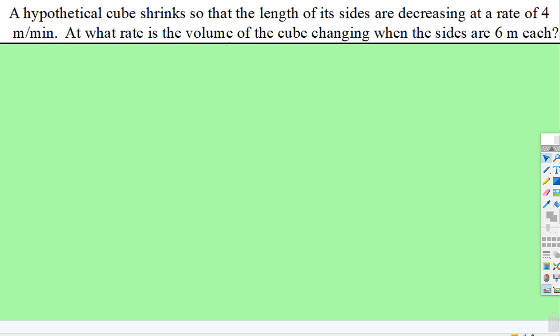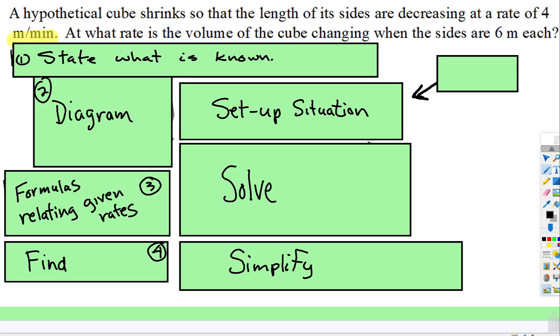Okay, we have another related rate example. This time we have a hypothetical cube. The sides are decreasing. So how is the volume, the rate of change of the volume decreasing at the given side length at six meters each? At the exact moment in time when the sides are six meters each, what is the rate that the volume will be decreasing because the sides are decreasing at a given rate?